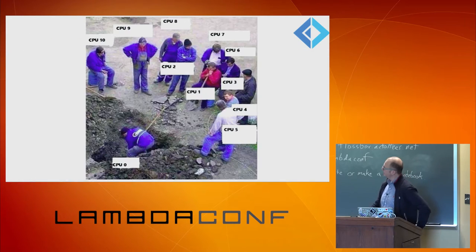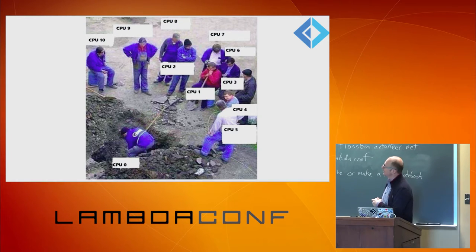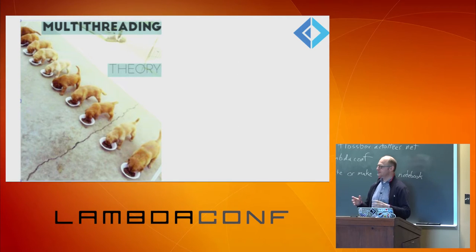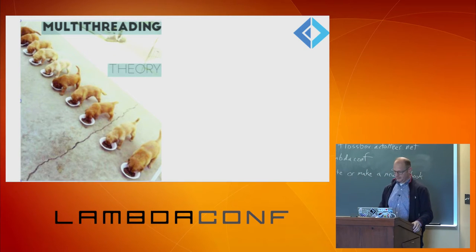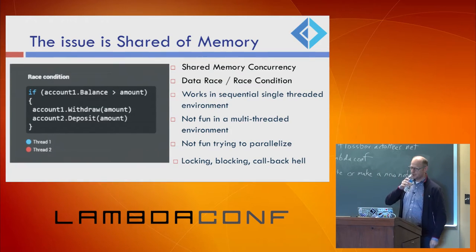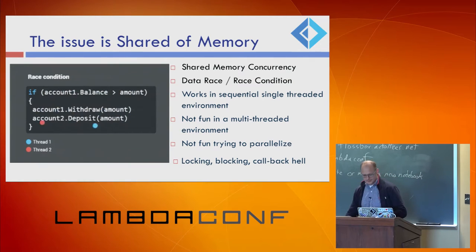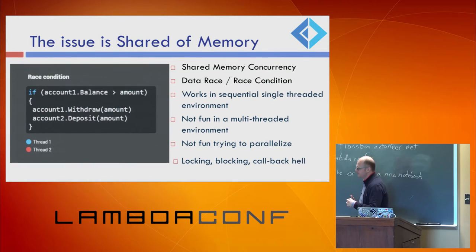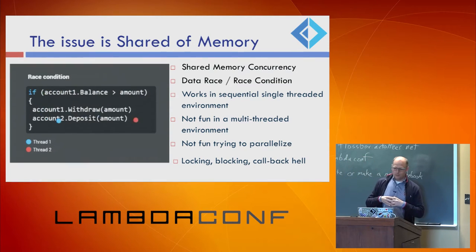When you run your application today, you find that only one CPU does all the work and the others just idle. So you might say, no problem, I'm going to spawn several threads and run a multi-threaded application. Well, that's pretty easy in theory, but in practice it's a bit more complicated. The problem is shared state. Correct concurrent application is hard - there might be deadlocks, race conditions, and so on.